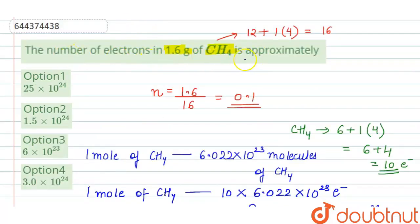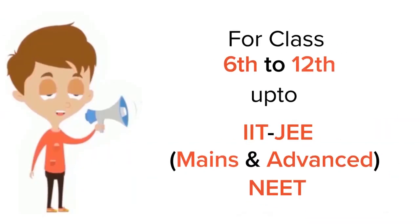So the number of electrons in 1.6 grams of CH₄ is approximately 6 × 10²³, which is option 3.